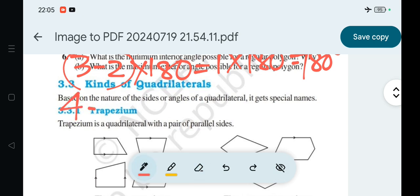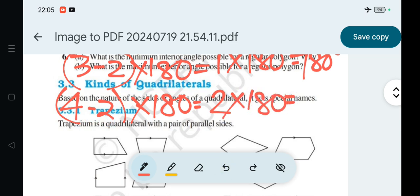For a regular quadrilateral, if we consider n equals 4, then (4-2) × 180 equals 2 × 180 equals 360 degrees.